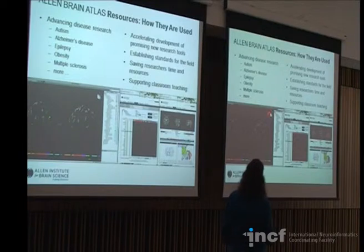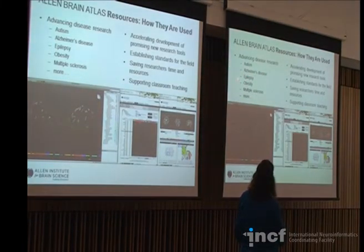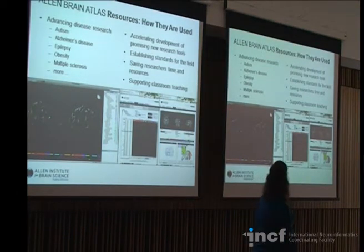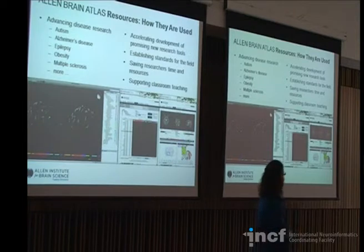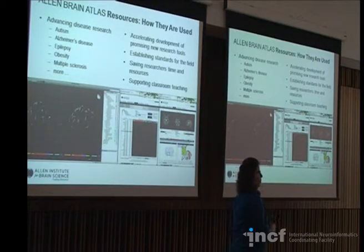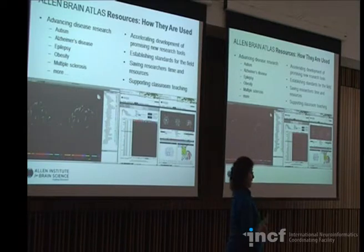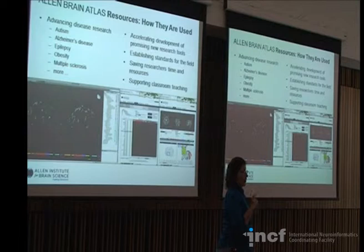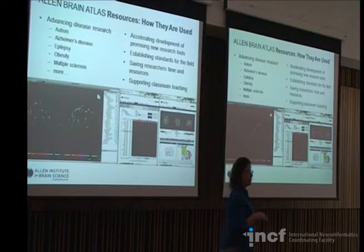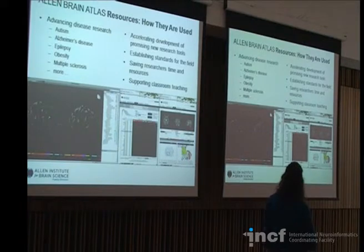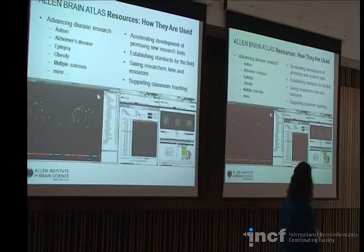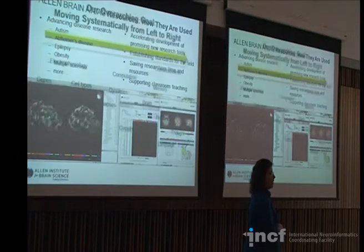Our resources are used for advancing disease research in autism, Alzheimer's disease, epilepsy, obesity, and multiple sclerosis. We accelerate the development of promising new research tools — we do things in a high-throughput way. The work that you do at the bench, we do on a very large scale. We are capable of processing ISH slides at an average daily capacity of around 600 slides a day if running at full capacity. Our resources also support classroom teaching, and our goal is to help you save time and resources by providing data up front.